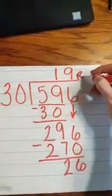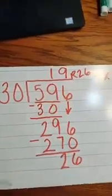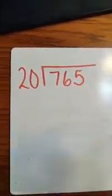We don't have any more numbers to bring down, so this is our remainder. 19 remainder 26. Alright, let's try a couple more. Okay, 765 divided by 20.